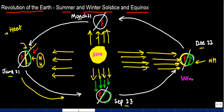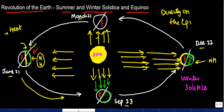The conditions which were there for the northern hemisphere now become the conditions for the southern hemisphere, because the south pole is now facing towards the Sun. This position is known as the winter solstice. In the two equinox positions — September 23 and March 21 — the sun rays fall directly on the equator, not on the Tropic of Cancer or Tropic of Capricorn, and these positions are known as the equinox.